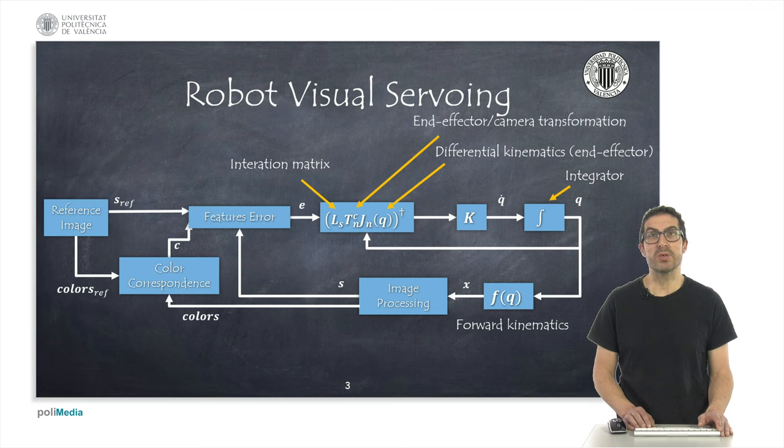an image processing method will provide us a list with the detected characteristics with their corresponding colors on actual images. With all this information, we need to compute an error between the features. In this case, I use color data to make the correspondence.